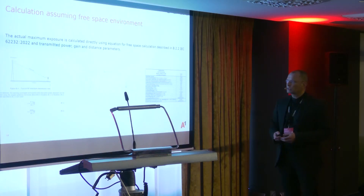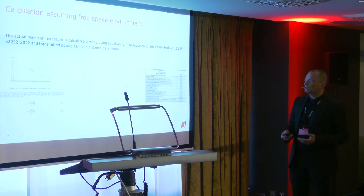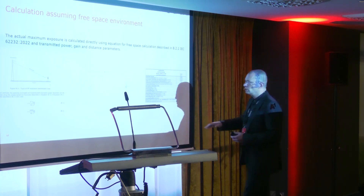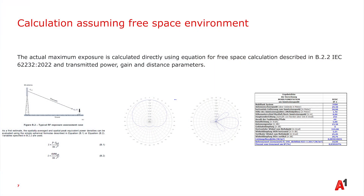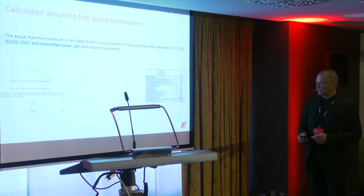First, as I mentioned, I calculated assuming a free space environment. It's included in the standard — you can calculate assuming free space environment. You have to know the shape of the antenna patterns and then you can calculate the exposure level. The problem is that no reflecting objects are included and you have only one direction, line of sight, calculated.